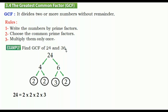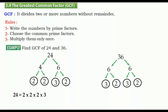Now let's write 36 by its prime factors. How can we get 36 by multiplying? Six and six. Is six prime? No. Let's continue — six is three times two. Is three prime? Yes. Is two prime? Yes. We circle those prime factors. So 36 equals two times two times three times three.